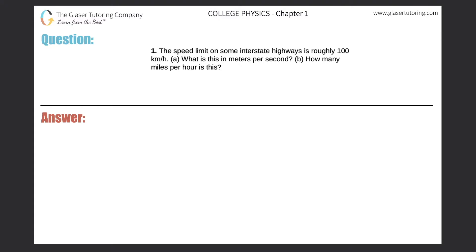Number one: the speed limit on some interstate highways is roughly 100 kilometers per hour. What is this in meters per second? So I know I have to do a basic conversion. Let's just set it up — we have 100 kilometers per hour and we're looking to convert that into meters per second.